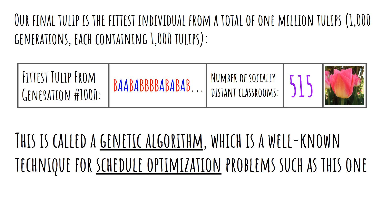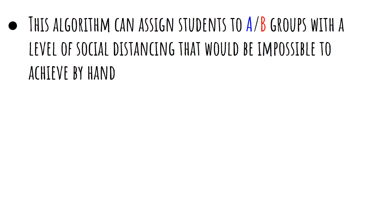This technique is called the genetic algorithm, and it's a well-known technique for schedule optimization. Schedule optimization is difficult, and this is a heuristic algorithm that can get us to a reasonably good solution in a reasonable amount of time. While not perfect, it will assign students to an A-B group with a level of social distancing that would not be possible to achieve by hand — we're trying to do better than a human could ever do on their own.